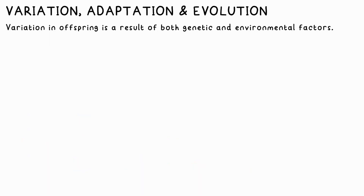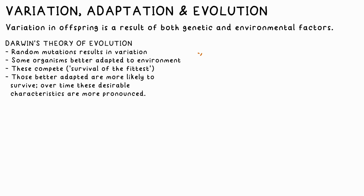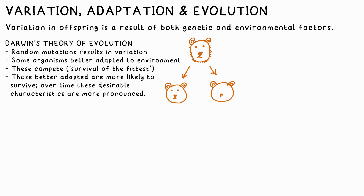Variation is a result of the genes inherited from an organism's parents and also environmental factors. Charles Darwin's theory of evolution claims that random variation in offspring will result in some being better suited to their environment than others, and so are more likely to survive and reproduce.